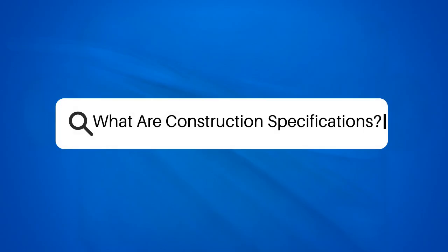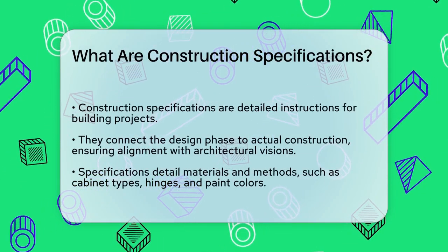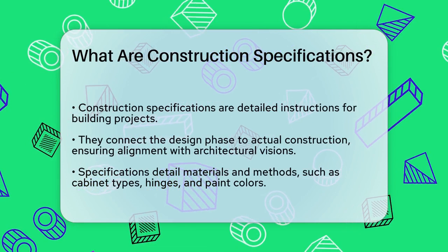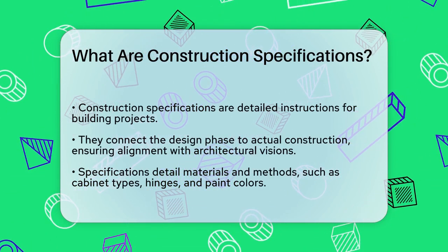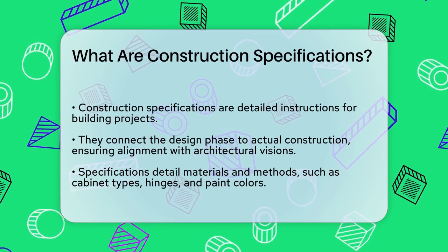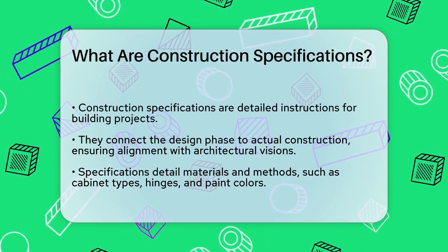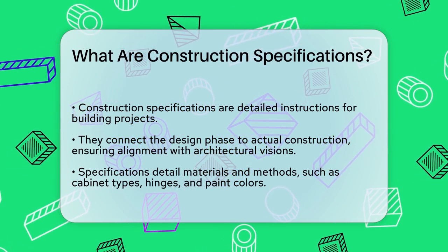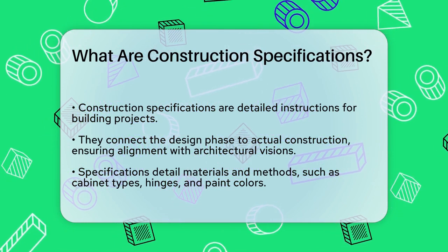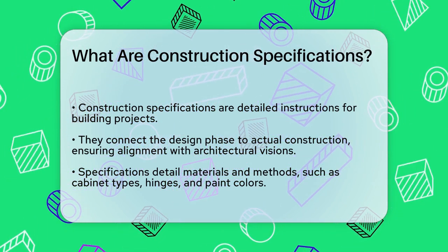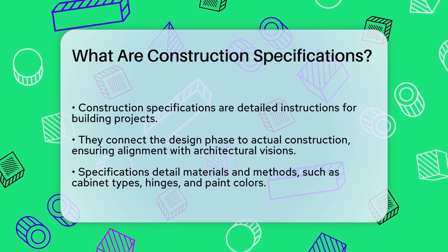What are construction specifications? If you're involved in a construction project, whether you're a contractor, architect, or client, you might have heard the term construction specifications thrown around. But what exactly are these specifications, and why are they so important? Construction specifications are detailed instructions that outline how a project should be built. They bridge the gap between the design phase and the actual construction, ensuring that what gets built matches what the architects and engineers envisioned.